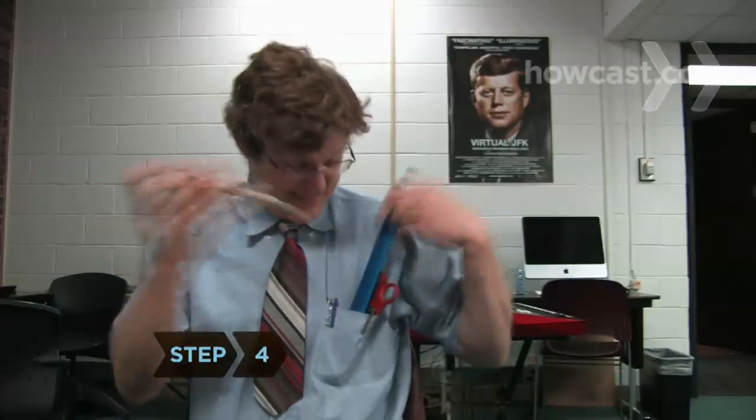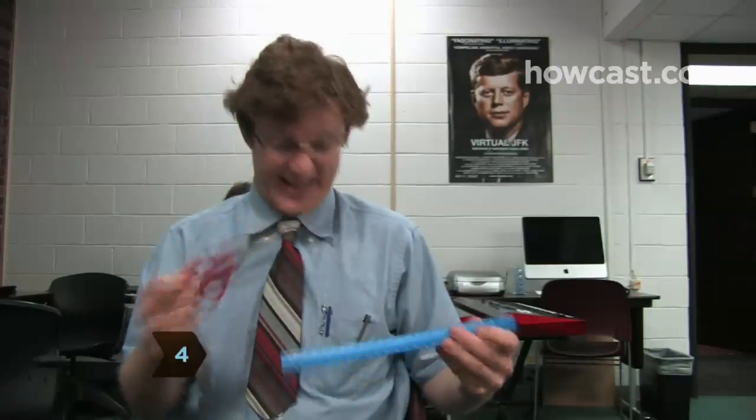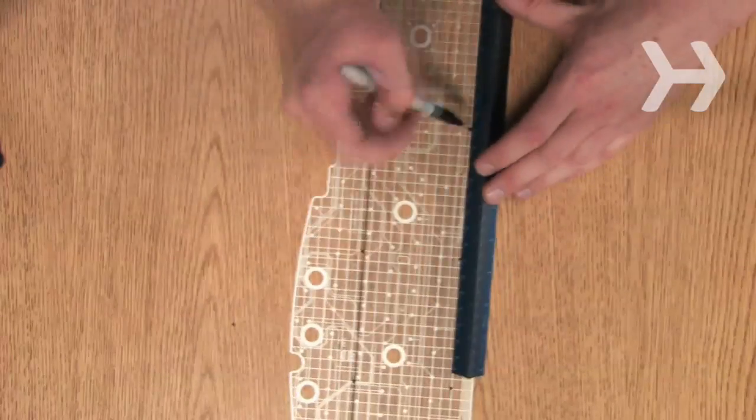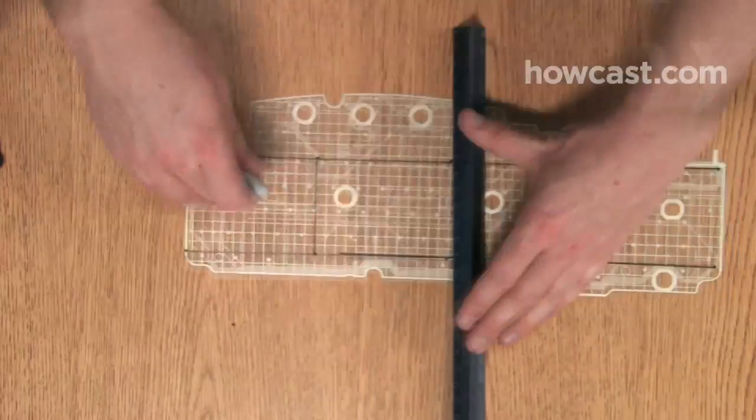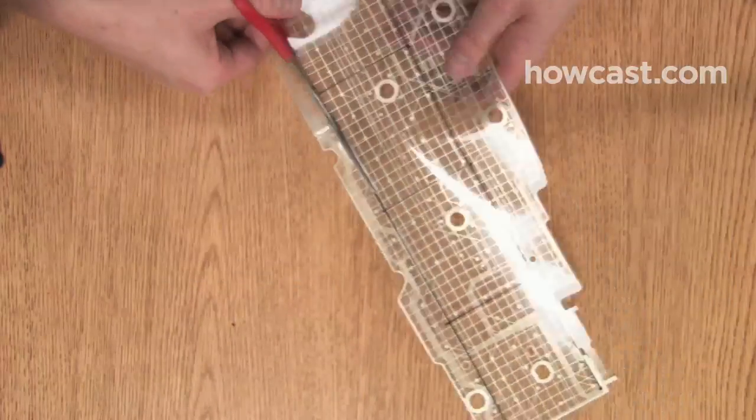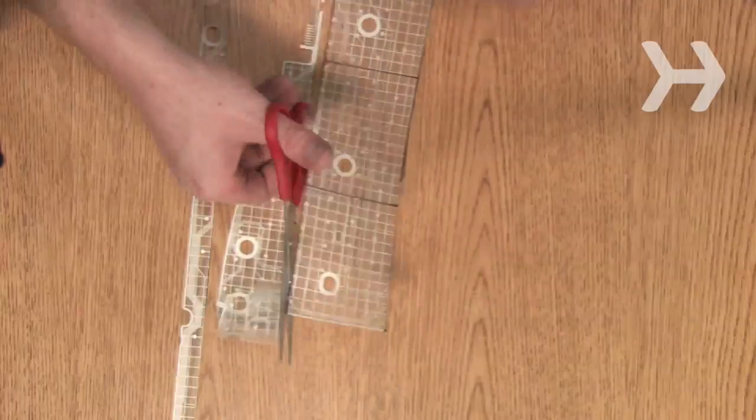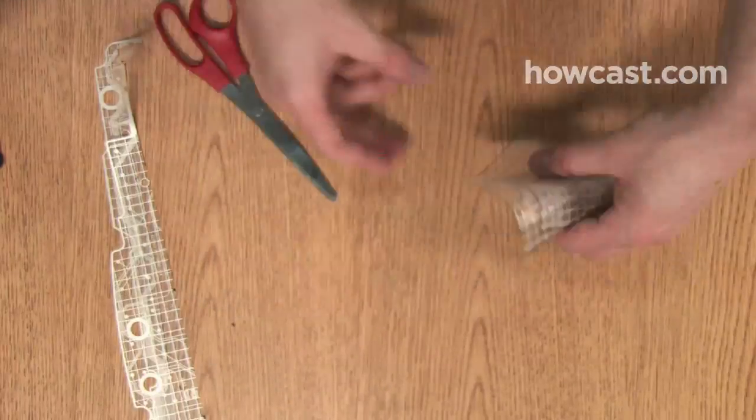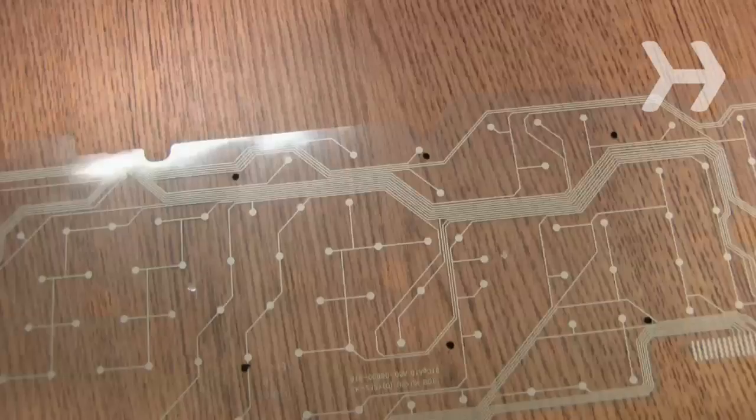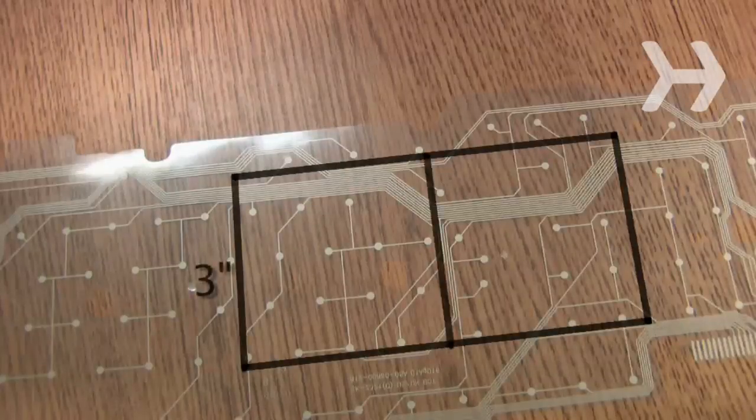Step 4. Using a pen, ruler, and scissors, measure, mark, and cut out four pieces of the circuit sheets that are three by four inches each. Make sure that no circuit sheet holes run along the edge of any rectangles. Then, cut out two more pieces, this time making them three by three inches each.